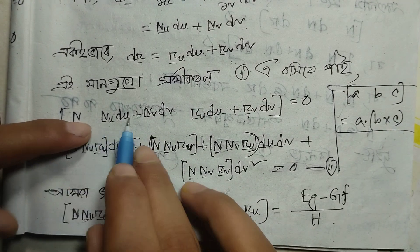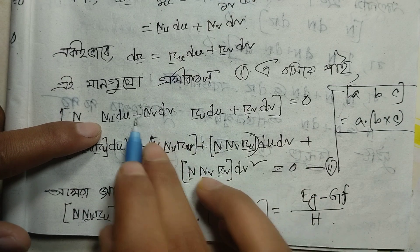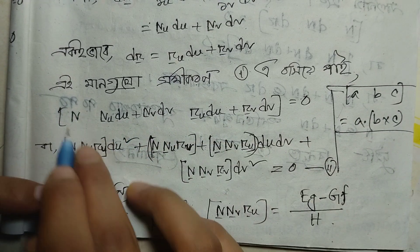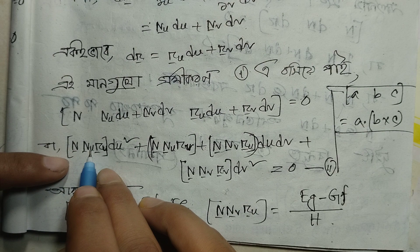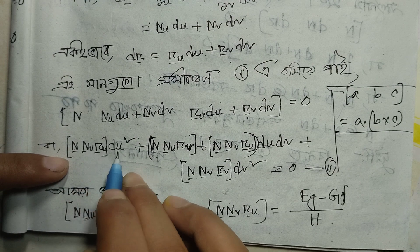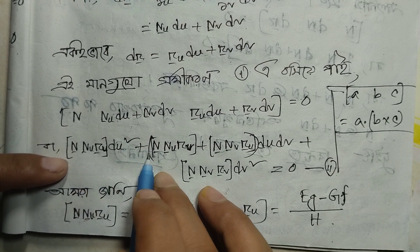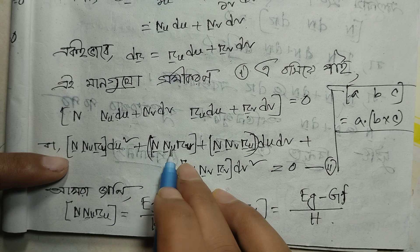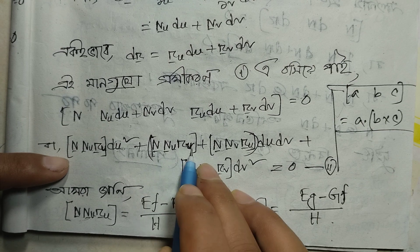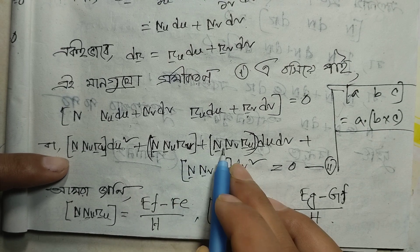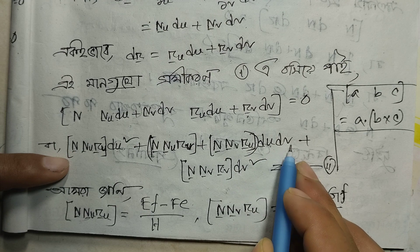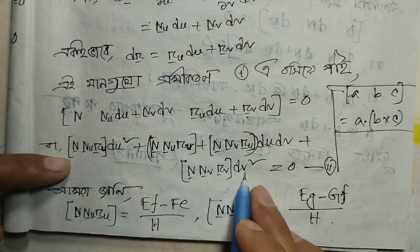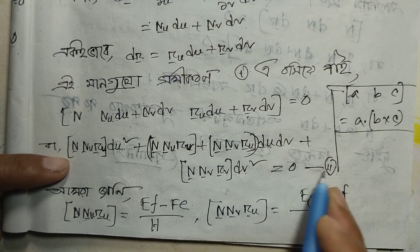a dot b cross c. a dot n: r_u into du squared, plus n_u r_v, plus n_u r_u du dv, plus n_u r_v dv squared equals to zero.